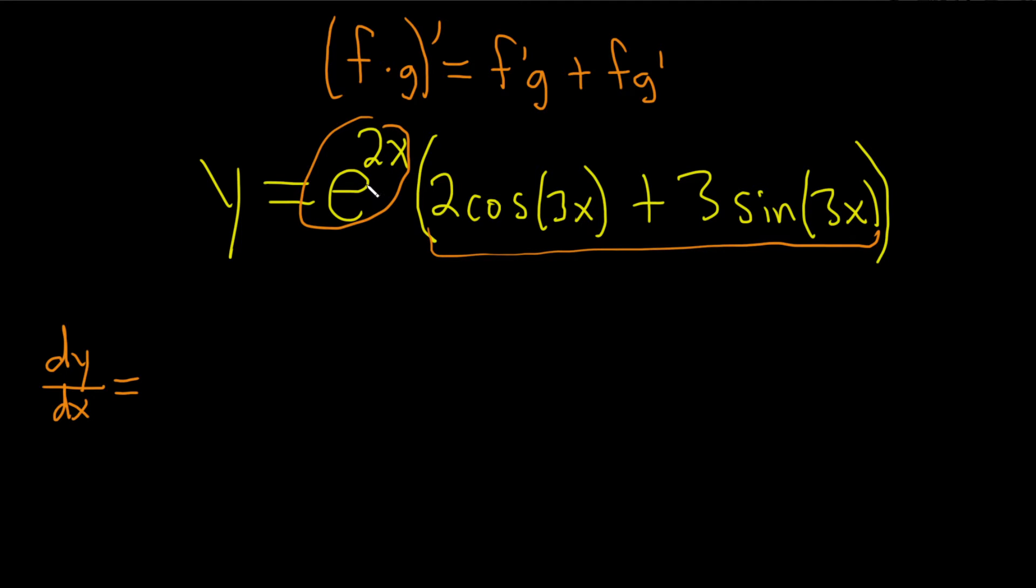So for the derivative of e to the 2x you have to use the chain rule. Keep in mind that the derivative of e to the x is e to the x. So here it's e to the 2x times the derivative of the inside function. Well the inside function is 2x and its derivative is 2. So that would be the derivative of the first and times the second.